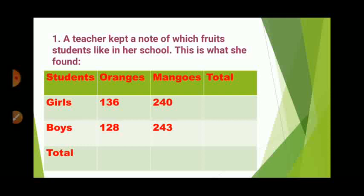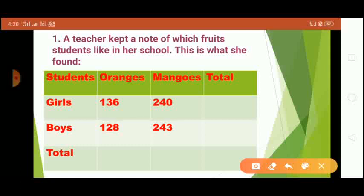So first of all, what we have to do here is find the total number of girls. This cell is blank, so we have to complete this table. Here 136 girls like oranges and 240 girls like mangoes, so to find the total we have to add 136 and 240.